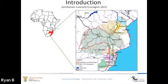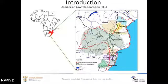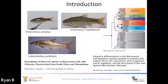Freshwater ecoregions are large areas encompassing one or more freshwater systems with a distinct assemblage of natural freshwater communities and species. There are 22 freshwater ecoregions in southern Africa, and the Zambesian Lowveld Ecoregion has the highest freshwater fish species diversity. The ZLE is defined by the low-lying portions of the coastal river systems south of the Zambesian Delta. Together, nine major river basins drain the ecoregion from north to south along the Indian Ocean coastline.